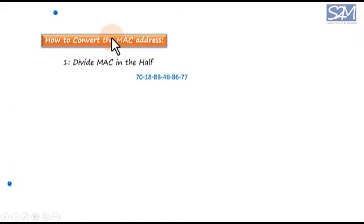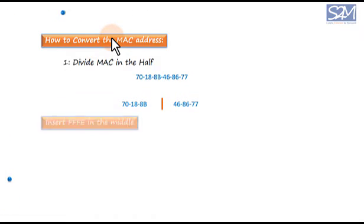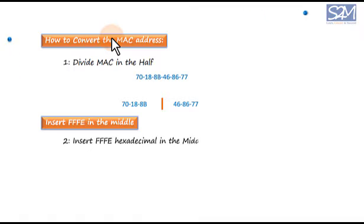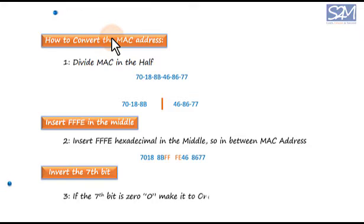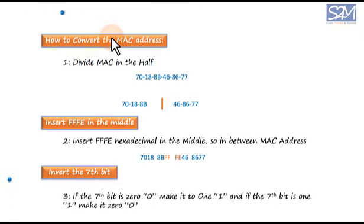There are three steps: 1. Divide the MAC address in half. 2. Insert FFFE (hexadecimal) in the middle, between the two halves of the MAC address. 3. If the 7th bit is 0, make it 1; and if the 7th bit is 1, make it 0.